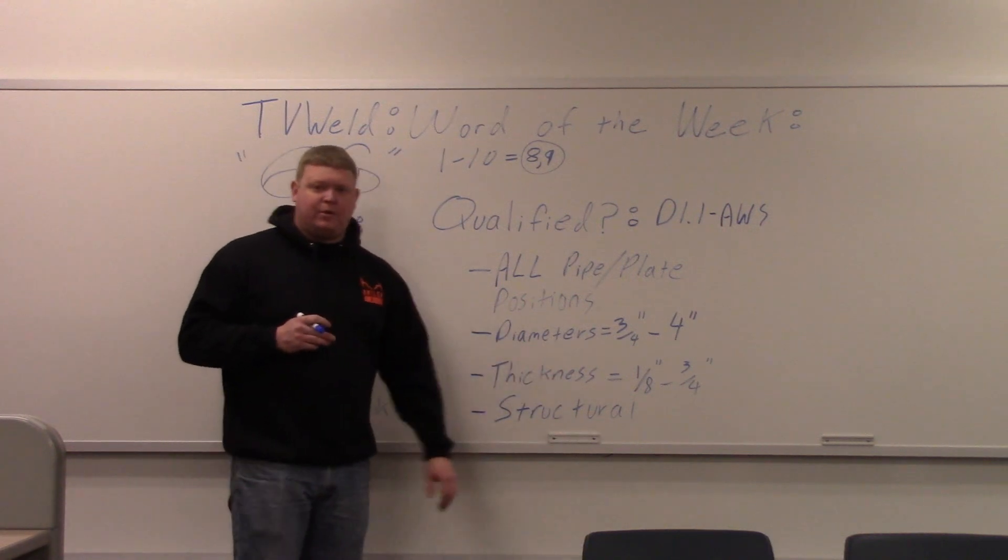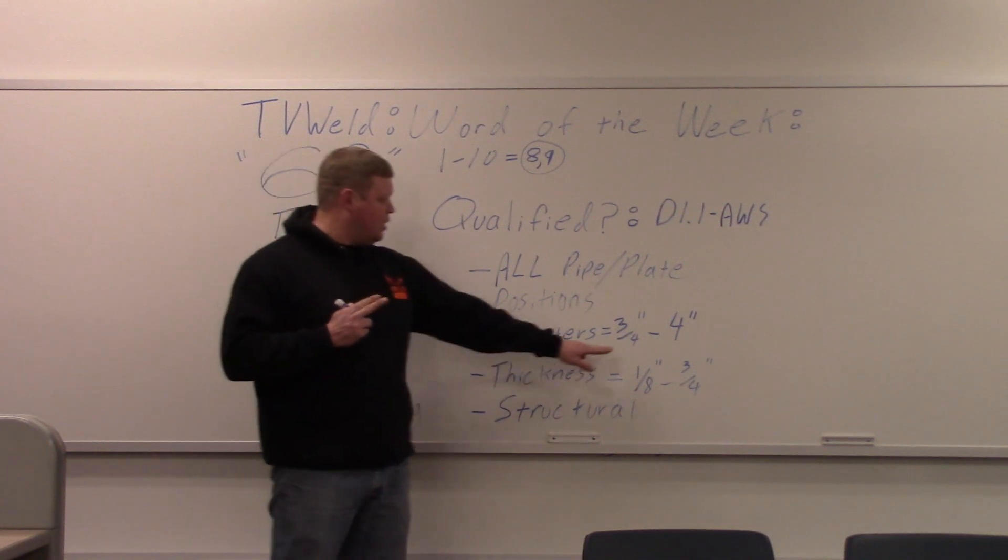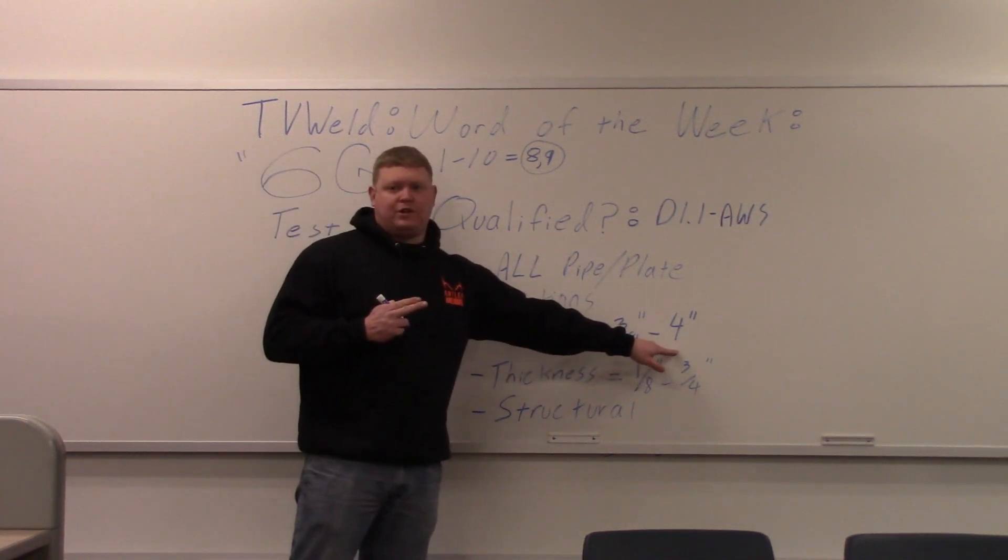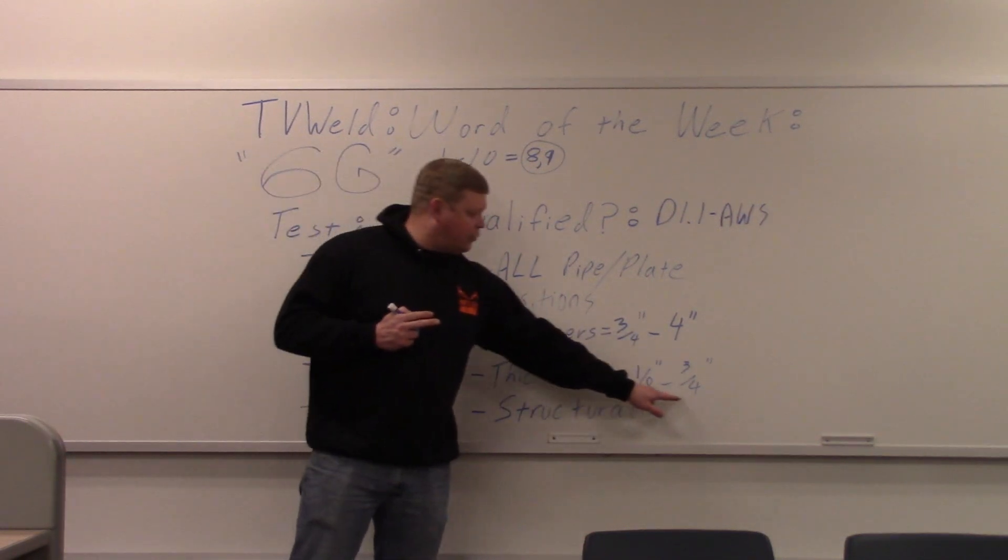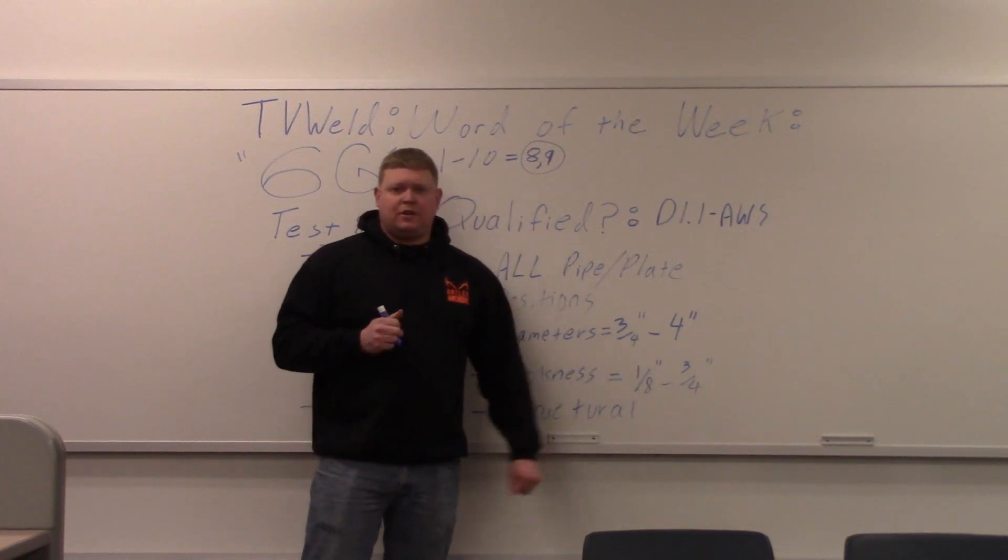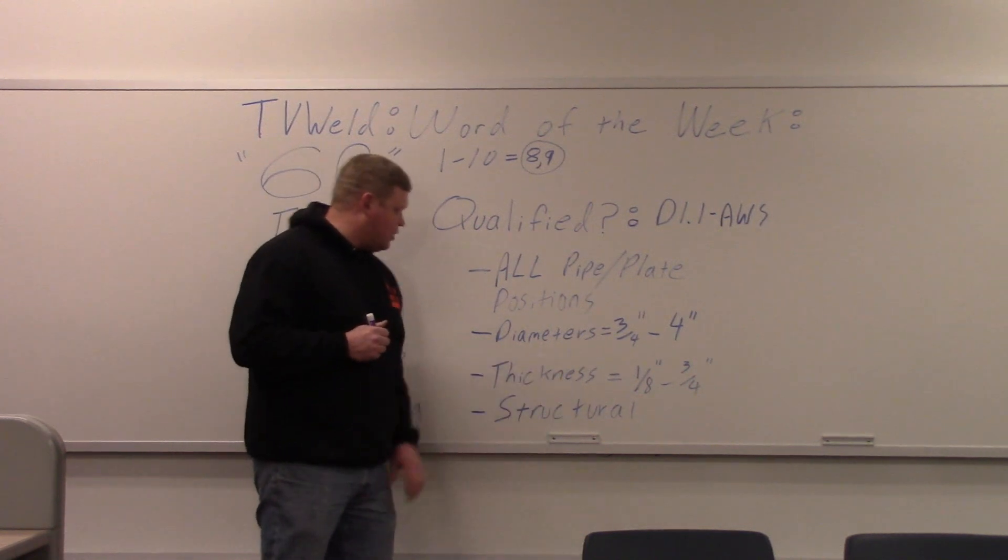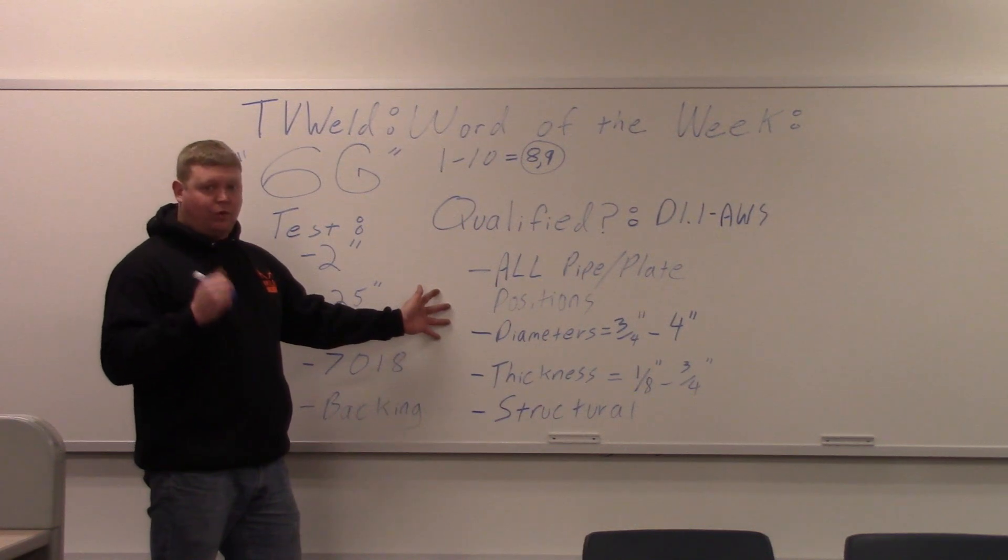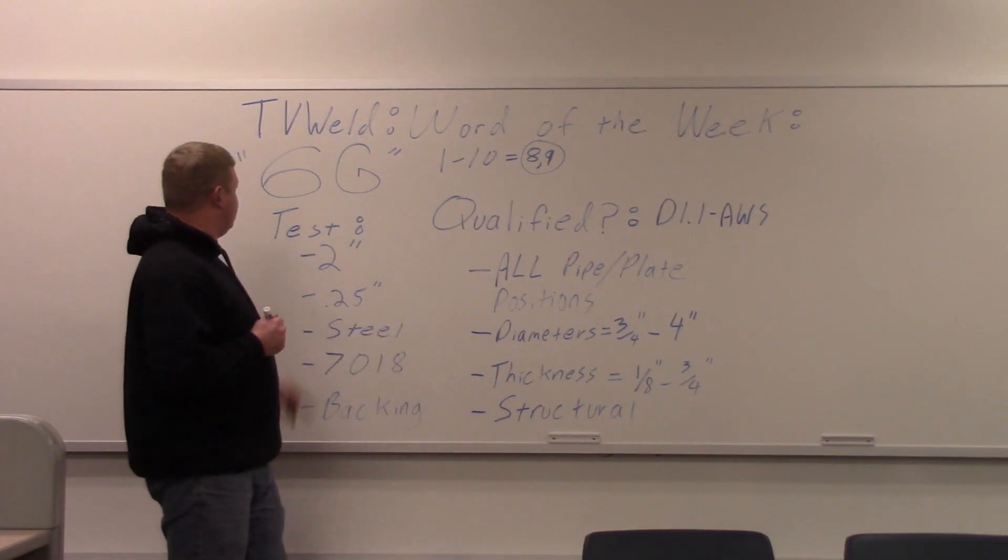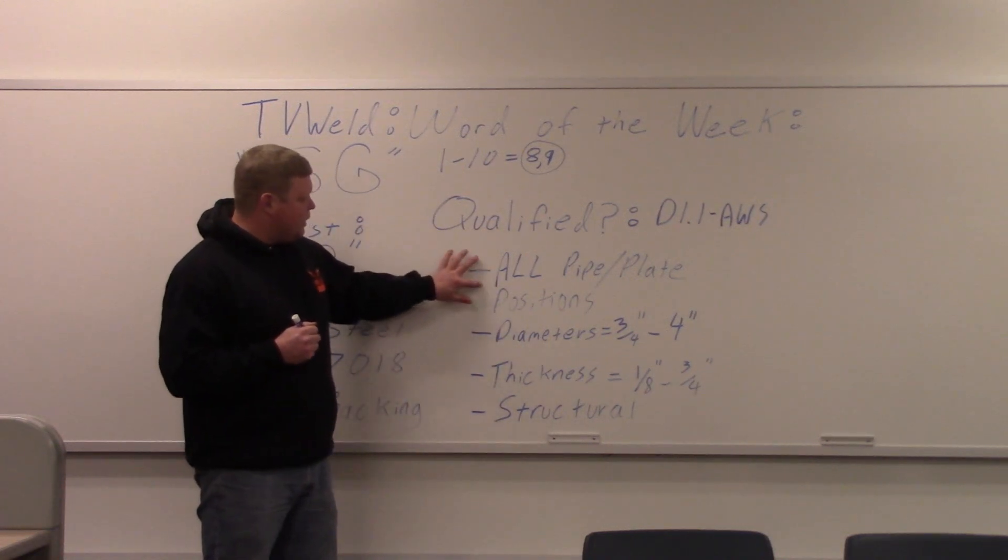Diameters. So what diameter pipe can you be certified to? According to the D1.1, if you do it on a 2-inch pipe, 3 quarters of an inch to 4 inch. So what happens if you have to weld a 6-inch pipe? You're not certified. Thickness. 1-8 of an inch to 3 quarters of an inch wall thickness. So what happens if your wall thickness is an inch? You're not certified. And we're over structural. So this is what you're qualified for doing a 2-inch, 1 quarter inch wall thickness, 6G certification. This right here.